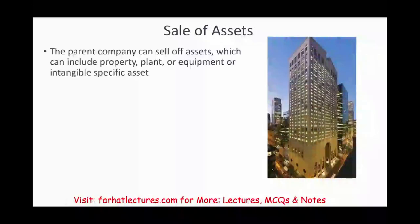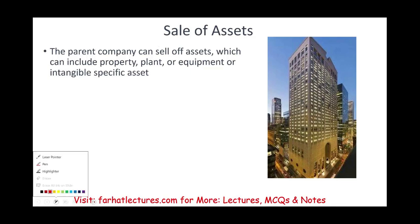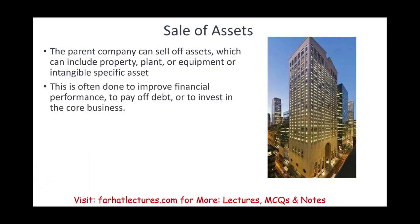Sale of assets: the parent company can sell off assets, which can include property, plant, or equipment, or specific intangible assets. So you're selling one specific thing. This is often done to improve financial performance, to pay off debt, or to invest in the core business because you really don't need that asset anymore and you're better off using the money somewhere else.